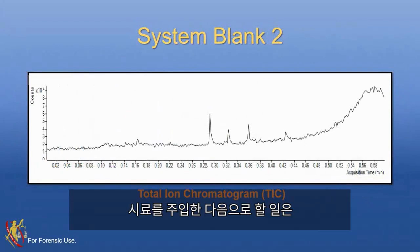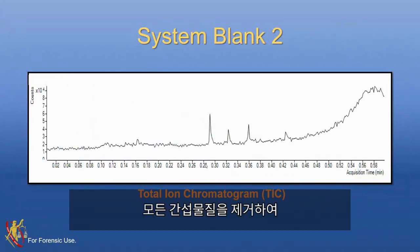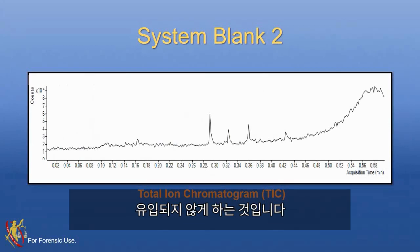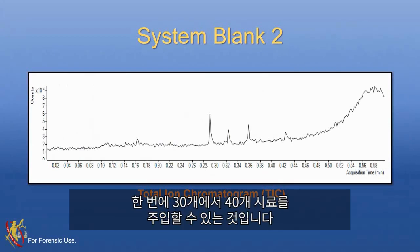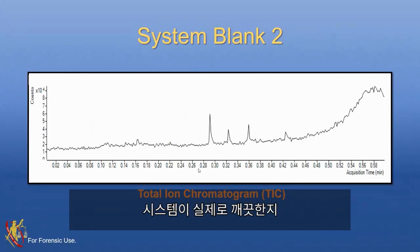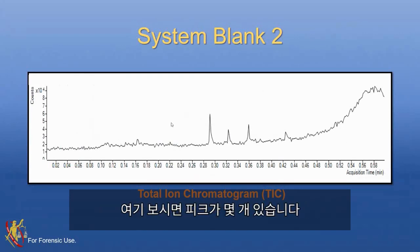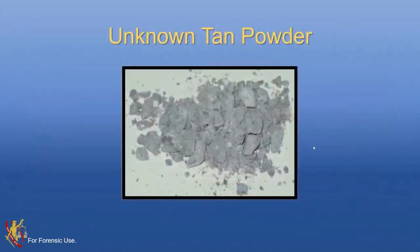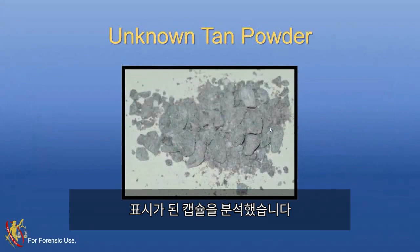After injecting our samples, we run a second system blank to clean out everything and ensure nothing from the previous sample carries into the next. Because we want to inject 30 to 40 samples in a day, we can't have something from six samples ago showing up. We run the second system blank to verify the system is actually clean, or whether we need to pause and clean out the system. What you're looking for here is just a nice blank chromatogram — if you see peaks, you hit pause.